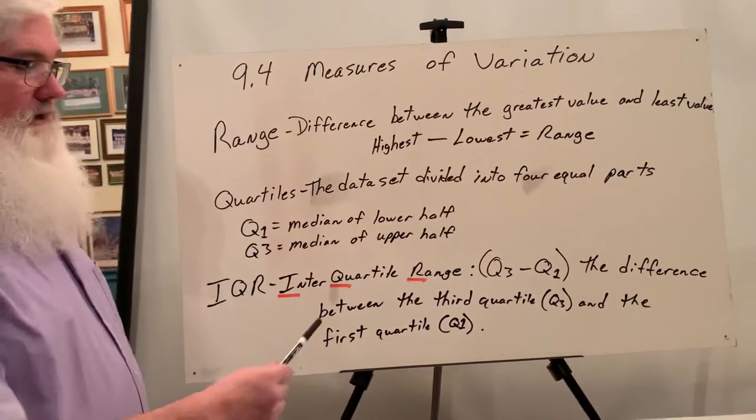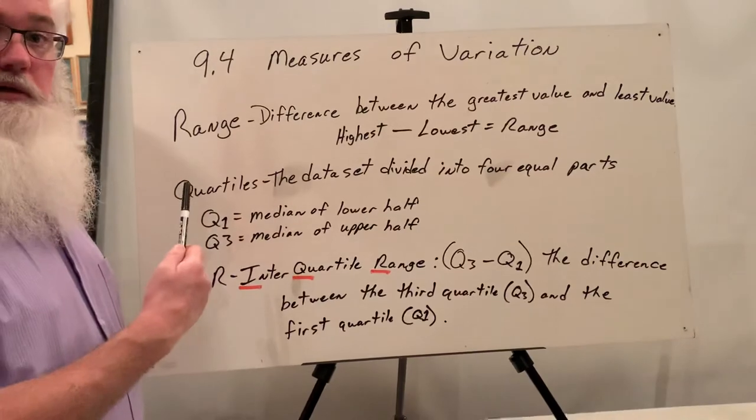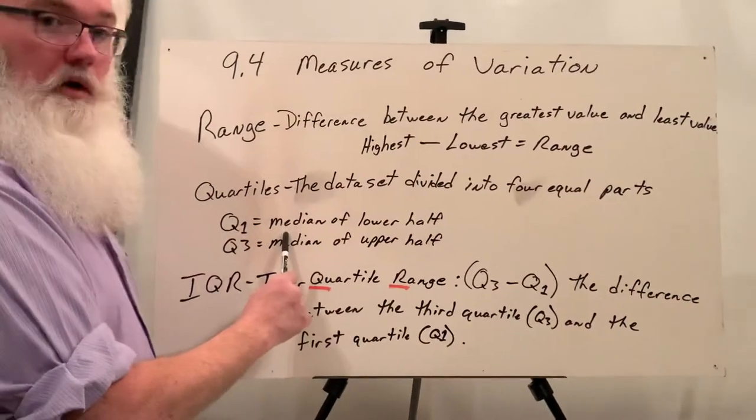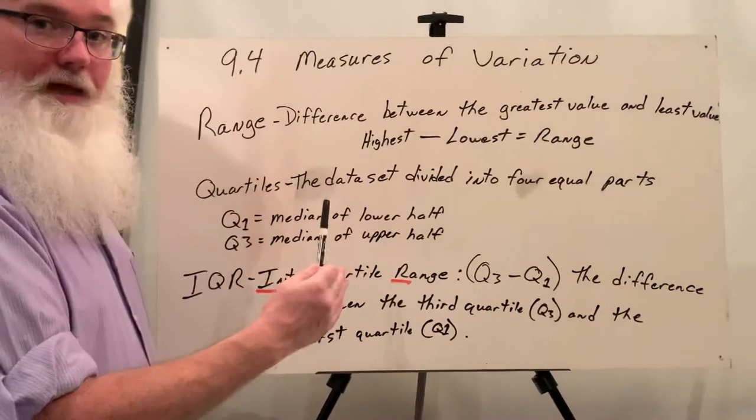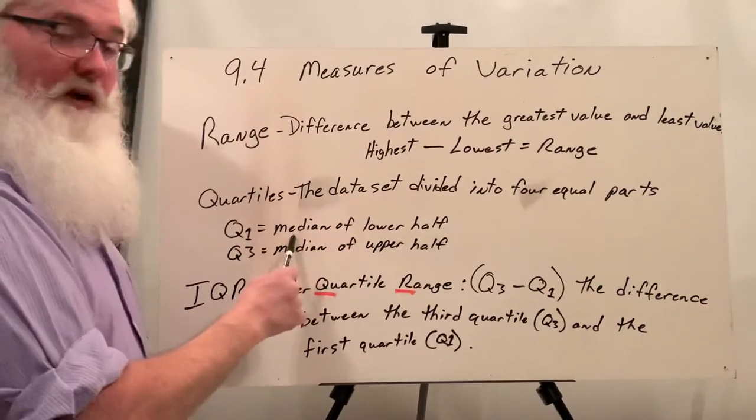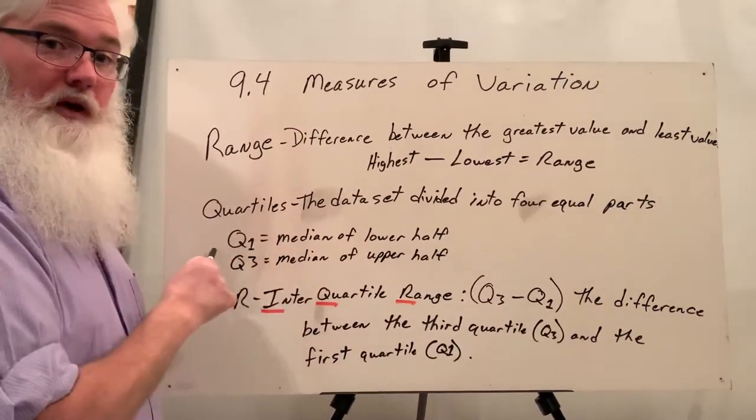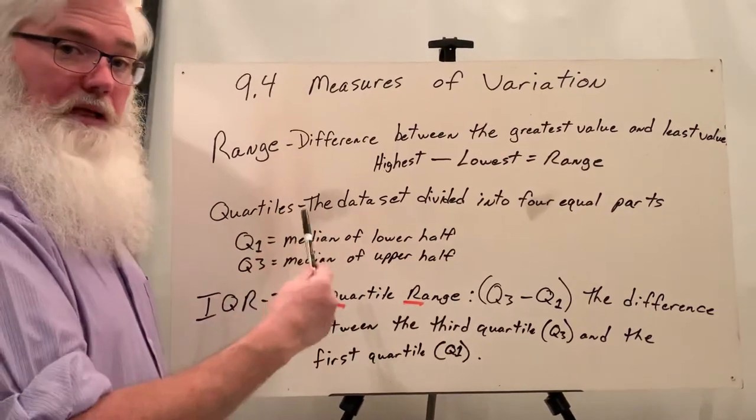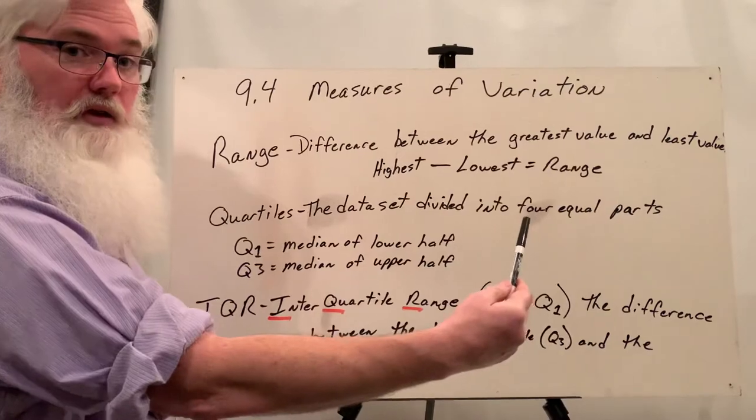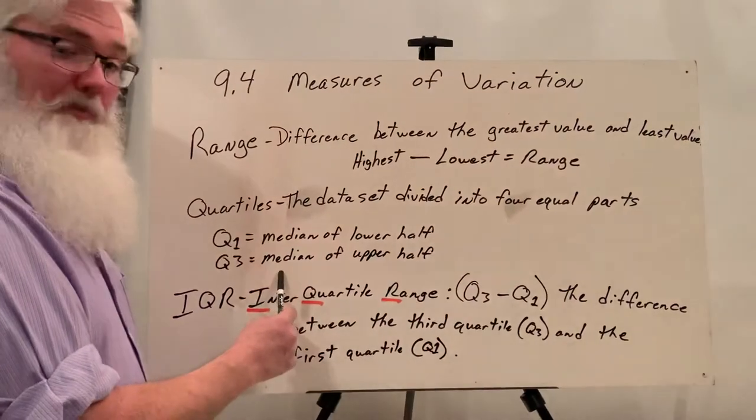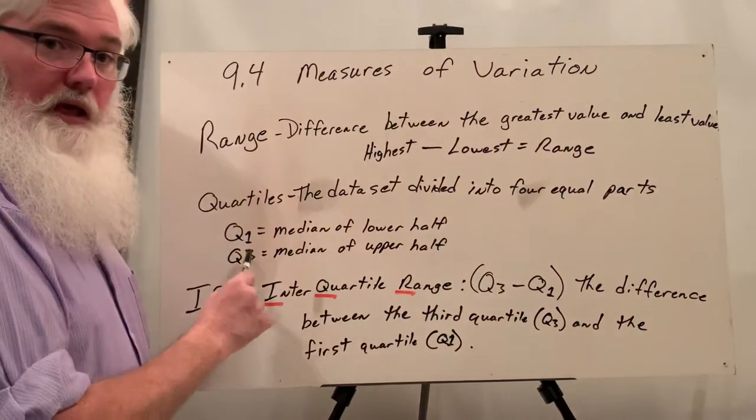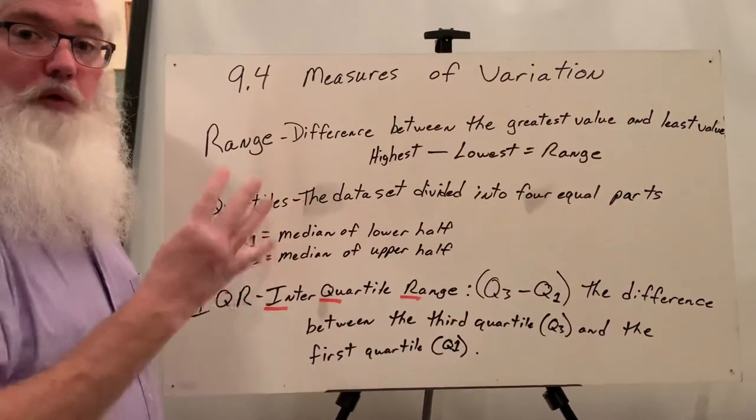So Q1, if we take the data set from the lowest number, the least value, to the median, and pretend that that's one data set, and then find the median of that, we have found Q1. And then on the other half, from the median to the greatest value, we find the median of that portion, and that will be Q3, and that will divide it into our four equal parts.